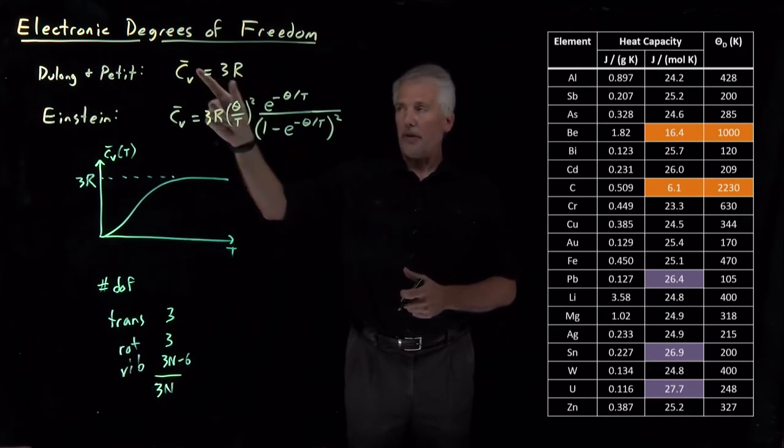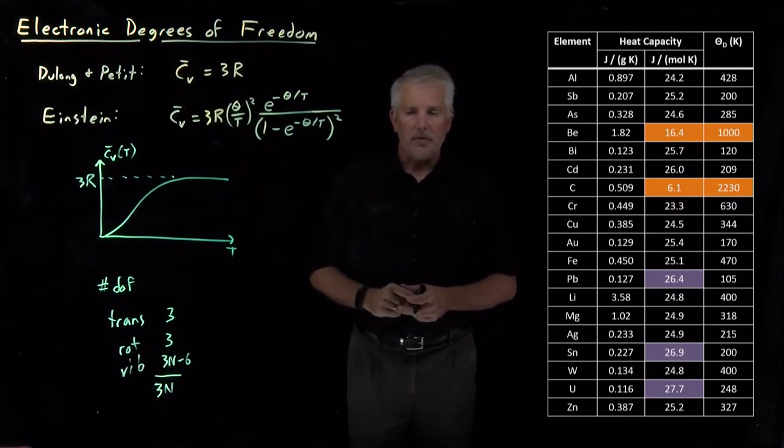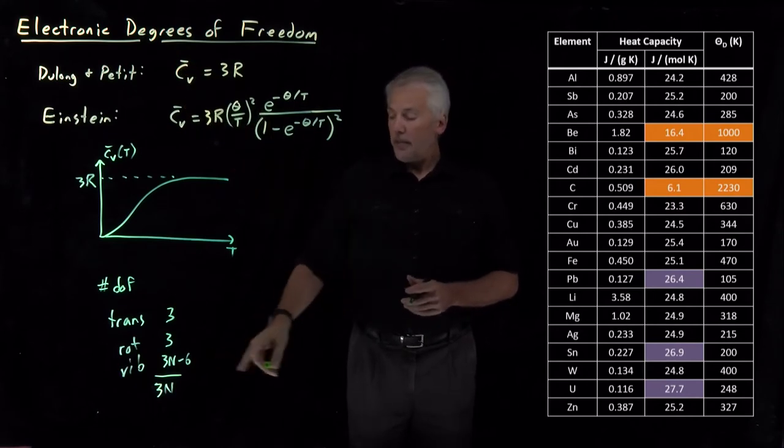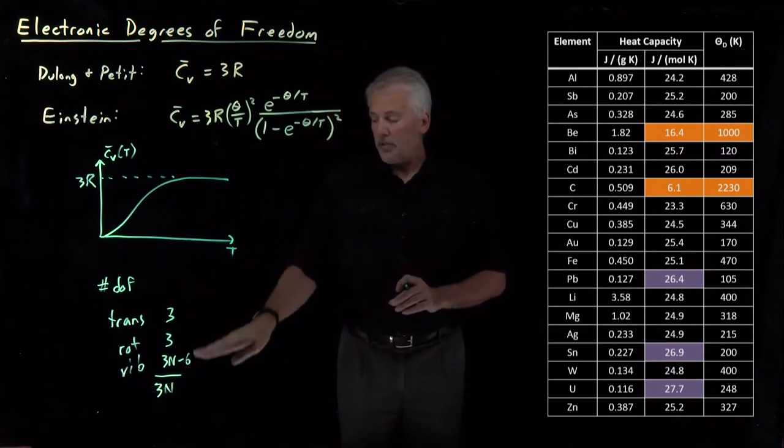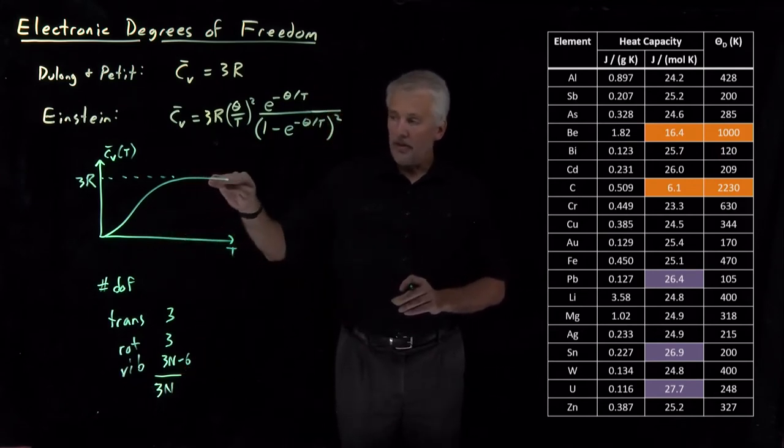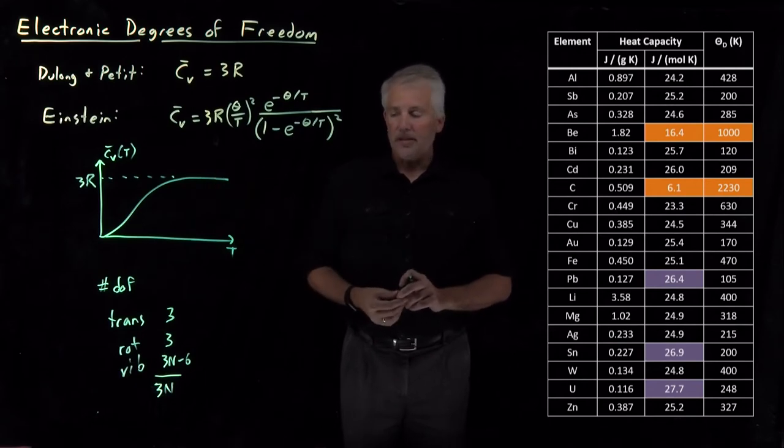Or 3 times R if I've divided by the number of atoms of the substance. So if the heat capacity is 3R, that implies not just that all these modes are completely classical and are completely contributing to the heat capacity, but there must be some additional degrees of freedom that are contributing to the heat capacity as well.